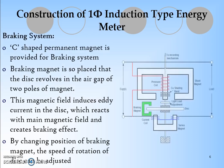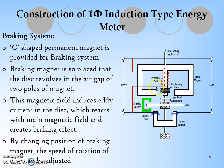Next we will discuss the braking system. The braking system is provided by a C-shaped permanent magnet. The braking magnet is placed so that the disc revolves in the air gap. This magnet field induces eddy current in the disc which reacts with the main magnetic field and creates braking effect. By changing the position of the magnet, keeping it inside or outside, we can control the braking effect.